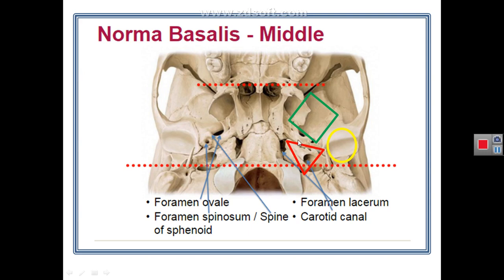The triangular region is the petrous temporal bone. The apex of the triangle shows an irregular fossa called the foramen lacerum, which is closed in living persons by cartilage perforated by some non-significant vessels. The suture between the petrous temporal and the greater wing of sphenoid contains a groove for the cartilaginous part of the auditory tube. The base of the petrous temporal bone shows the carotid canal, which allows passage of the internal carotid artery.